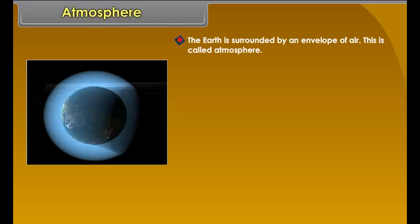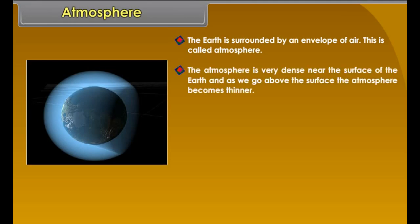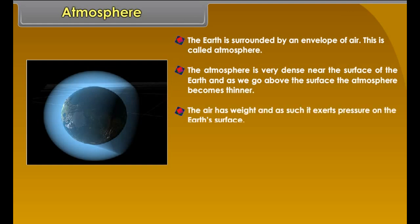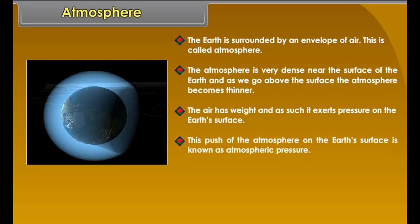Plains. Extensive low lands with a relatively flat or level surface are called plains. Plains which are located along the coast are called coastal plains. Most rivers in their lower courses deposit alluvium. The northern plains of India are formed by such alluvial deposition by the Ganga and its tributaries.